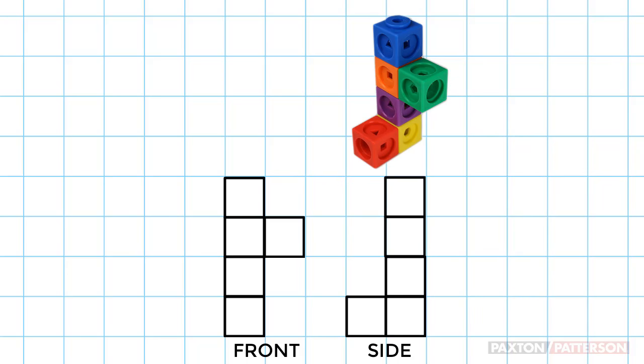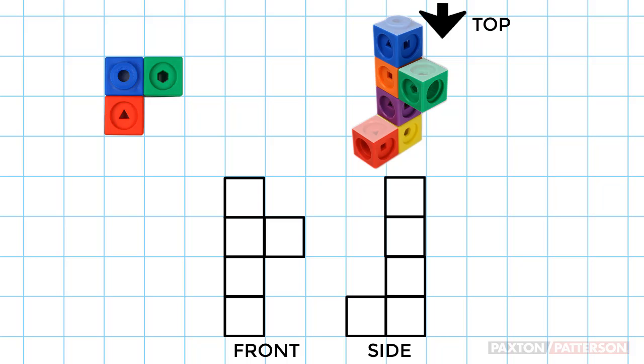Lastly, I'll draw the top view. It looks like this. The top view is the same width as the front view, so I can draw reference lines up. This is the blue block, the green block, and the red block.